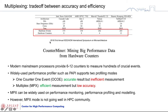If you want to use just one counter per event — we call this the OCOE mode — only 8 events can be recorded on Intel Xeon processors. This will provide accurate results, but it is inefficient. That means you have to run hundreds of times if you want to collect 100 events for one case.